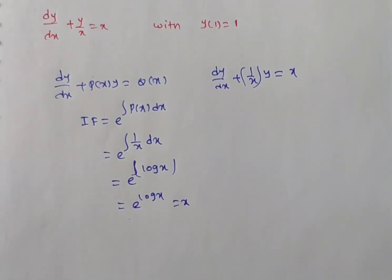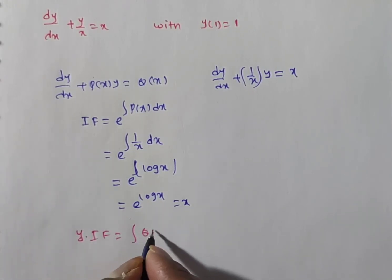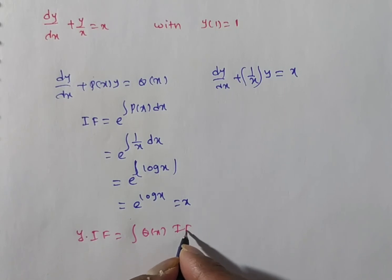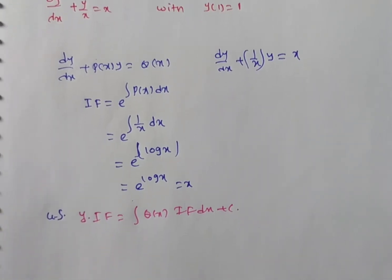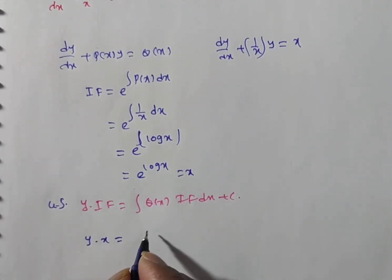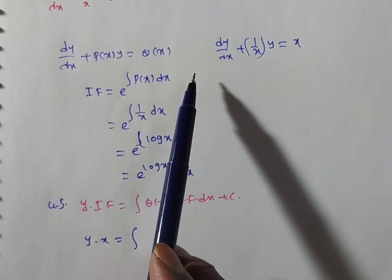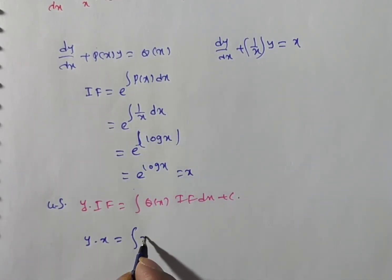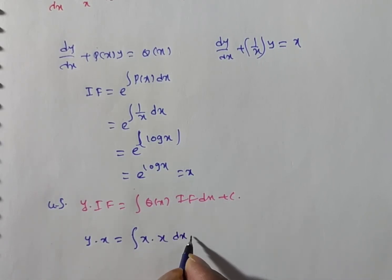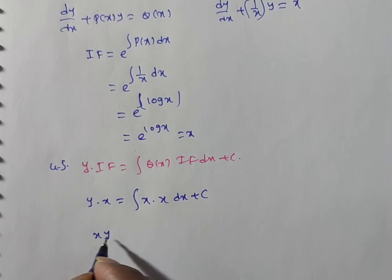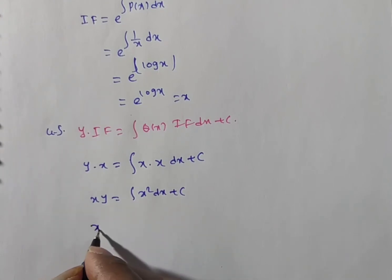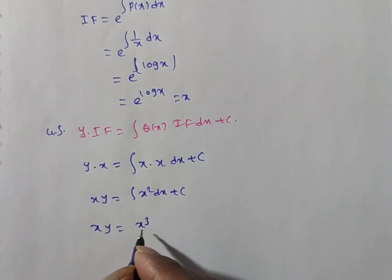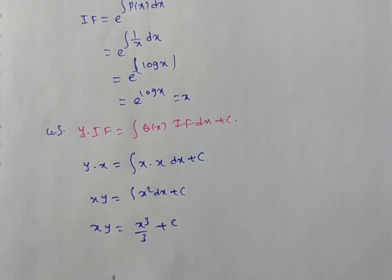The general solution for a linear DE is y × (integrating factor) = ∫Q(x) × (integrating factor) dx + C. The integrating factor is x, so: x·y = ∫Q(x)·x dx + C. Here Q(x) = x (the right-hand side), so: x·y = ∫x·x dx + C = ∫x² dx + C = x³/3 + C.